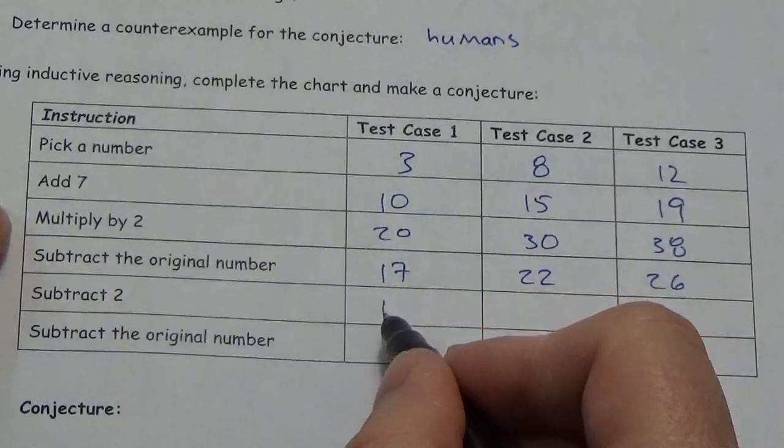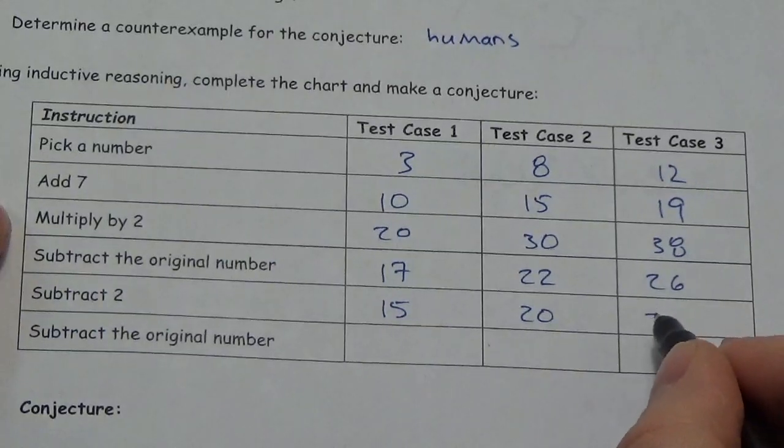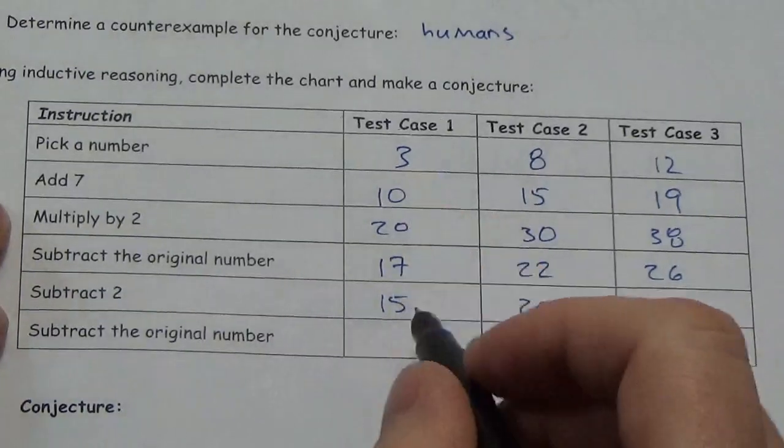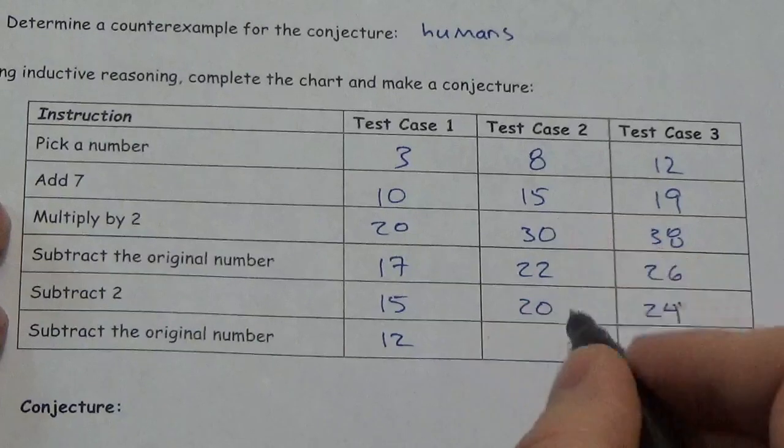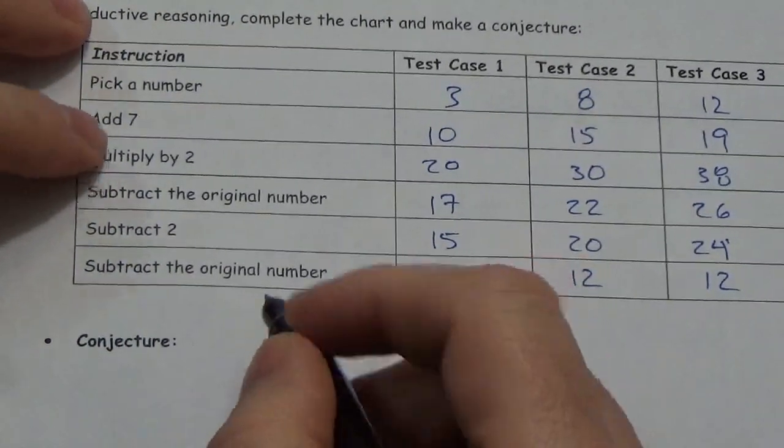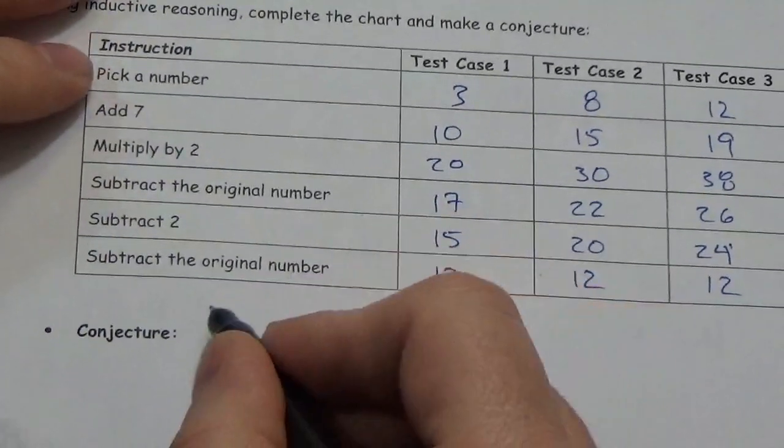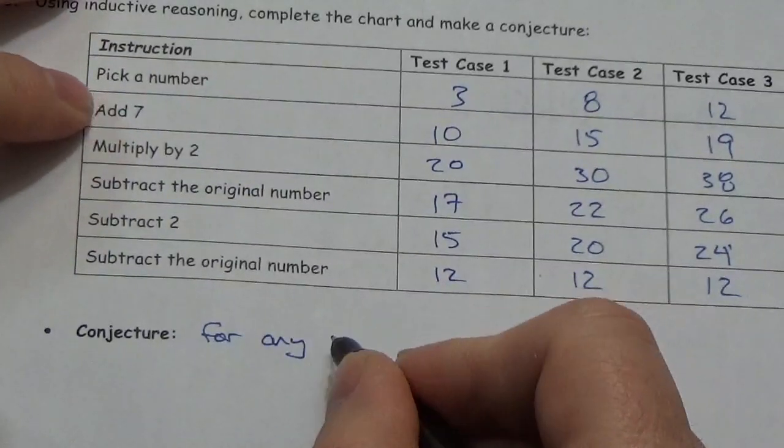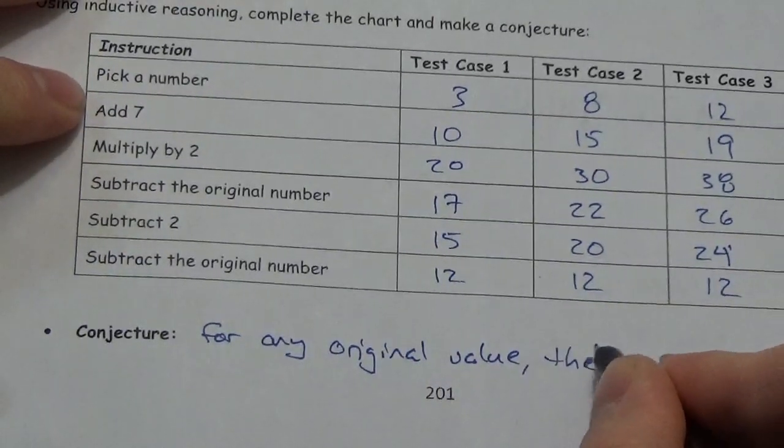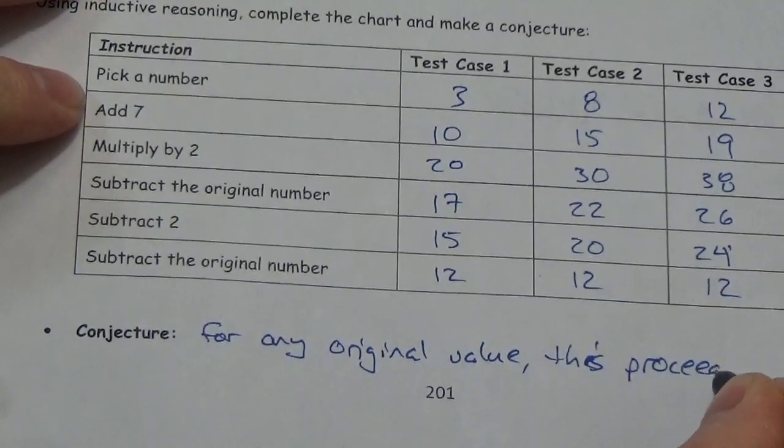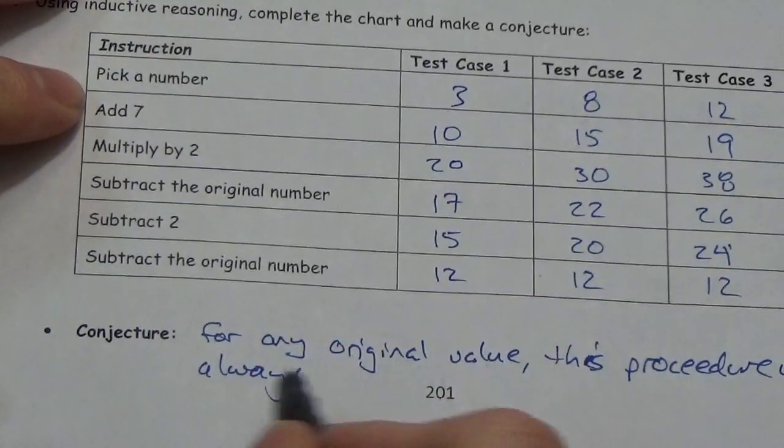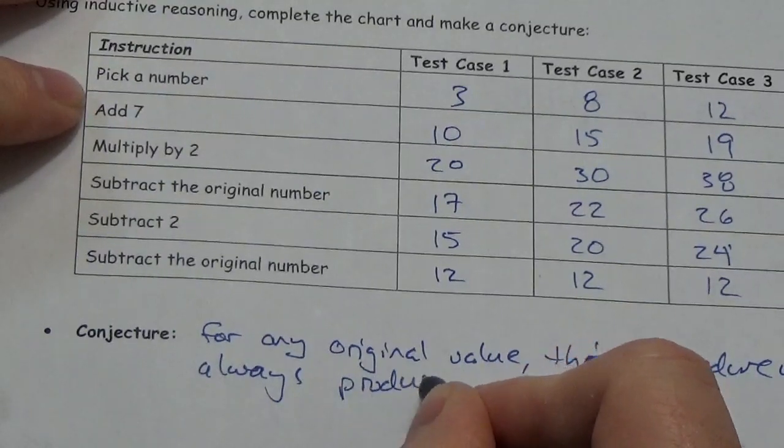Subtract two. That's going to be fifteen, twenty, twenty-four. Subtract the original number. So that's going to be twelve. That's going to be twelve. That is going to be twelve. So, what's our conjecture? That for any original value, this procedure will always produce twelve.